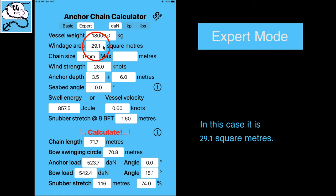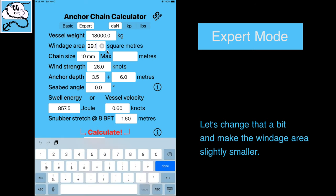In this case, it is 29.1 square meters. Let's change that a bit and make the windage area slightly smaller.